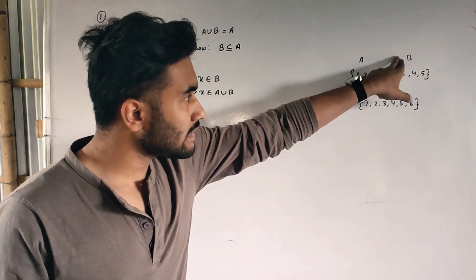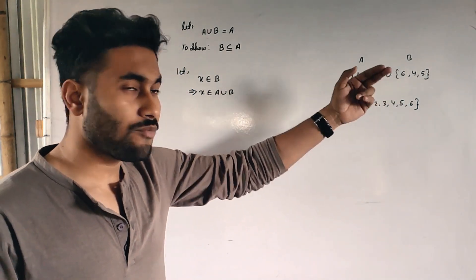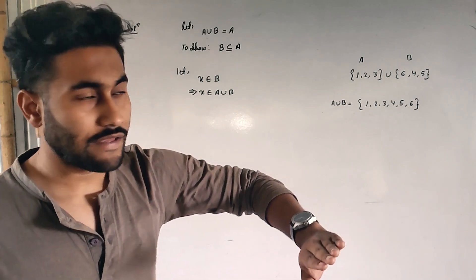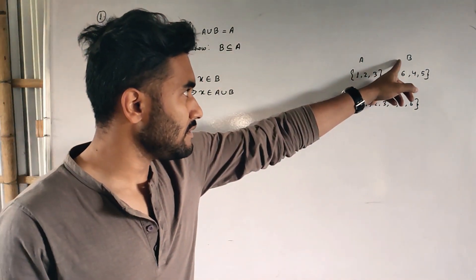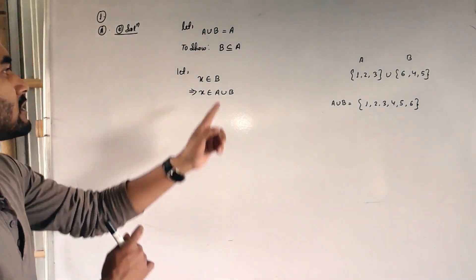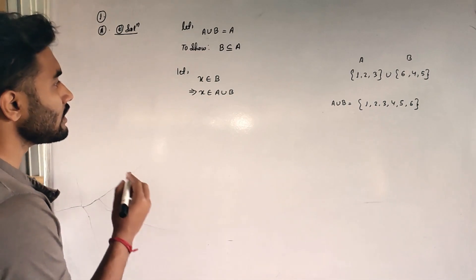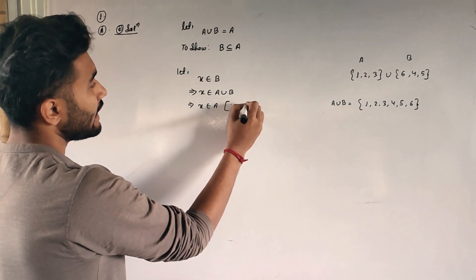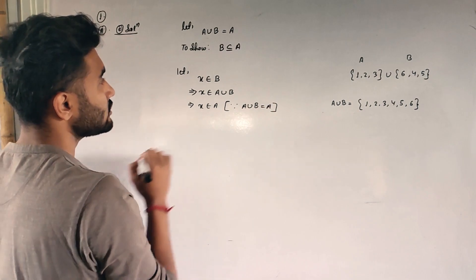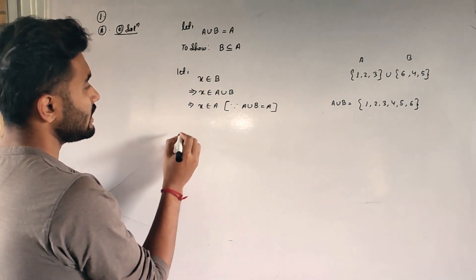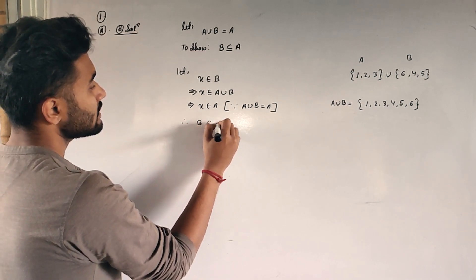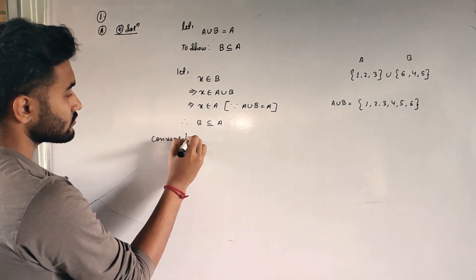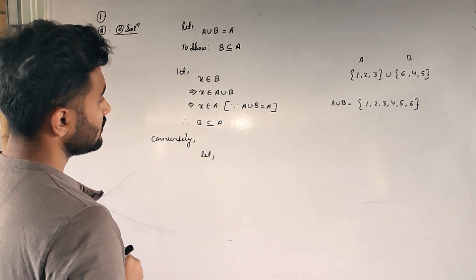The opposite is not correct — 1, 2, 3 are in A union B but not in B. But this is correct: if it stays in B, then it must stay in A union B also. So if x belongs to B, then obviously x belongs to A union B. Now you can use the given — A union B is equal to A — so I will write x belongs to A. Since A union B is equal to A, I started with B and finished in A. Therefore B is a subset of A. First part done.